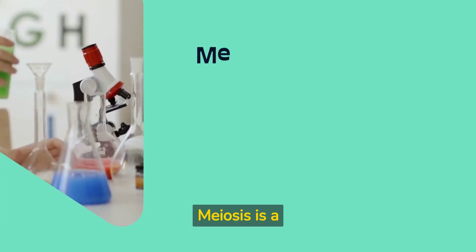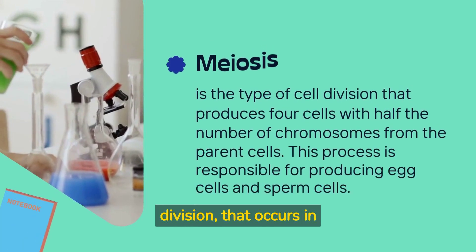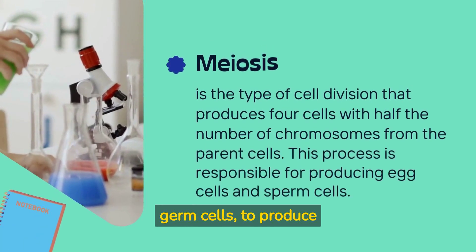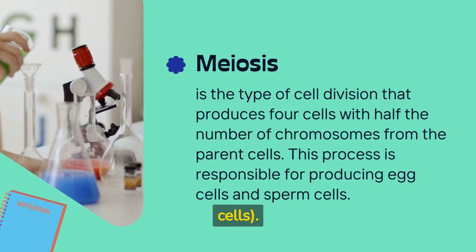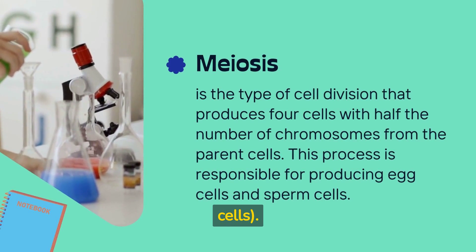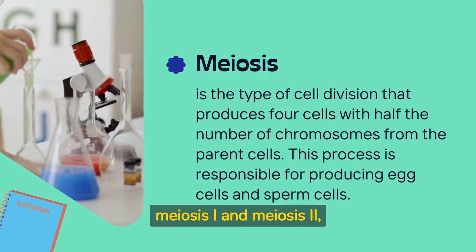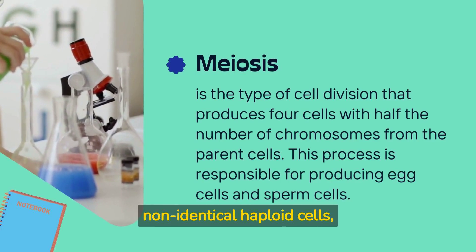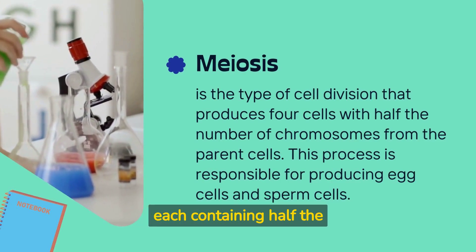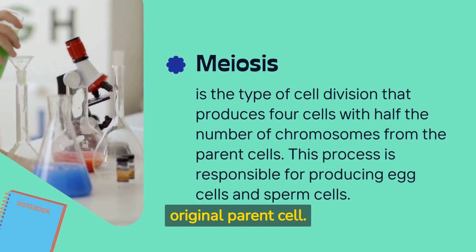Meiosis is a specialized form of cell division that occurs in germ cells to produce gametes — sperm and egg cells. It consists of two successive divisions, meiosis I and meiosis II, resulting in four non-identical haploid cells, each containing half the number of chromosomes as the original parent cell.